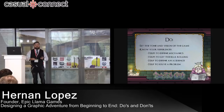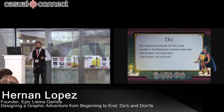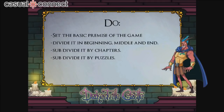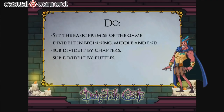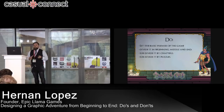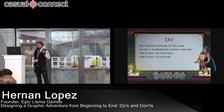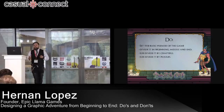Another DO: Set the basic premise of the game. In our case, it was a demon who meets a group of demon hunters trying to hunt him. You start with a loosely definitive premise and develop it. Then divide it into beginning, middle, and end, and subdivide by chapters. In graphic adventure games, you go from solving one problem to the next, so the chapter structure forms naturally. These chapters are made out of little puzzles that make the story complete.